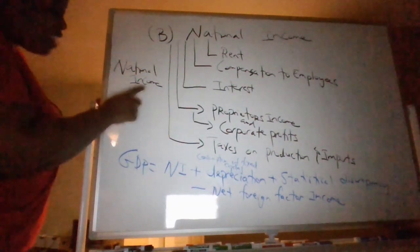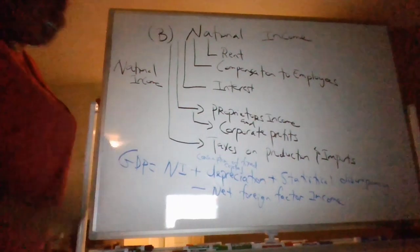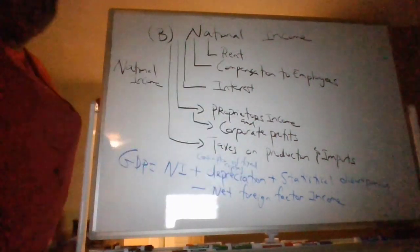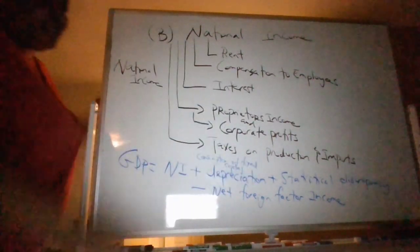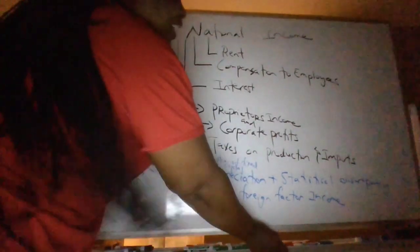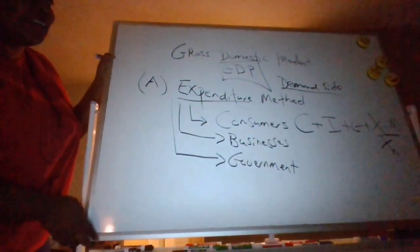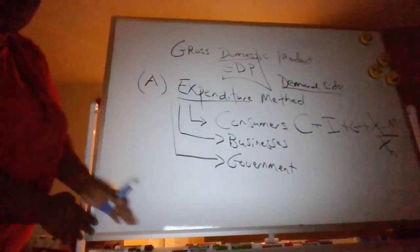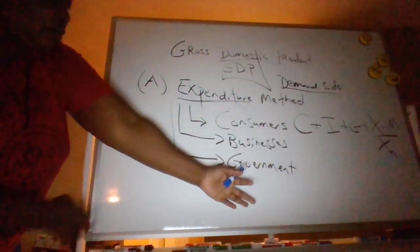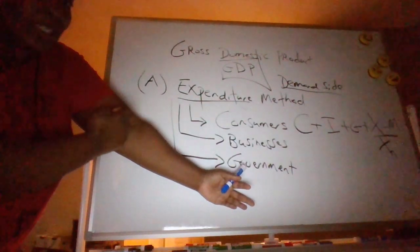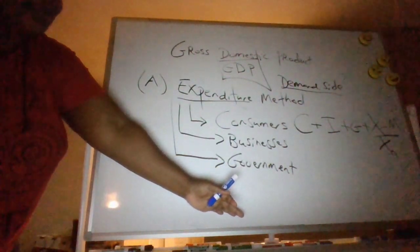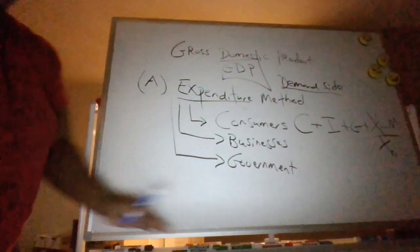Net foreign factor income also includes individuals who are not citizens of the domestic economy but are producing here. For example, a Toyota plant in Ohio with a Japanese national working there — they're not counted in the national income, but they're producing in the U.S., so that's added back in. It takes out domestic individuals' income when they're not producing here, and adds back in foreign individuals who are producing here but not in the national income. So if you want to move from national income to GDP, those are the three things you do. And if you want GDP by the expenditure method — C plus I plus G plus XN.